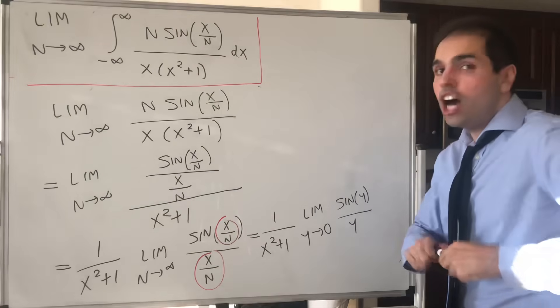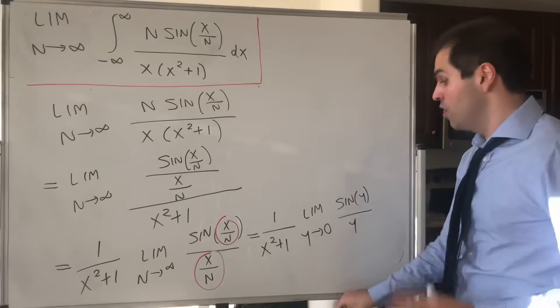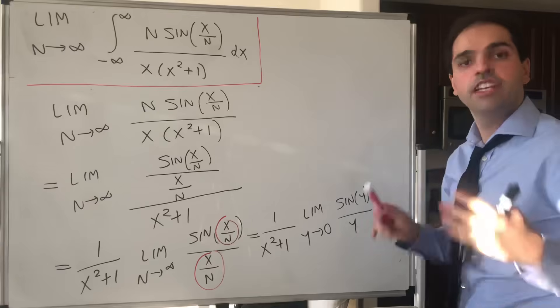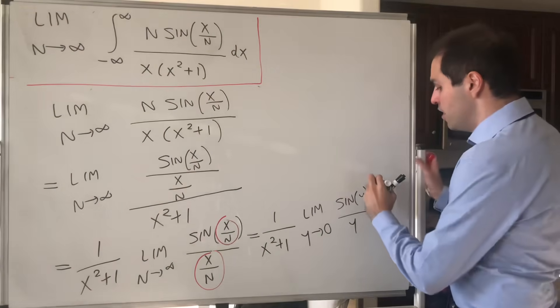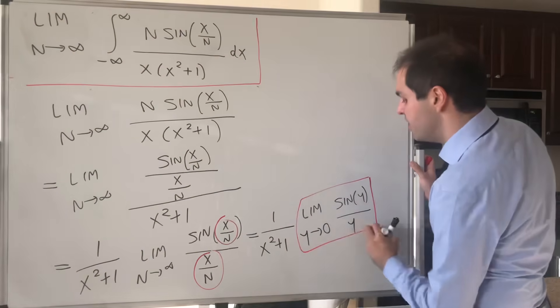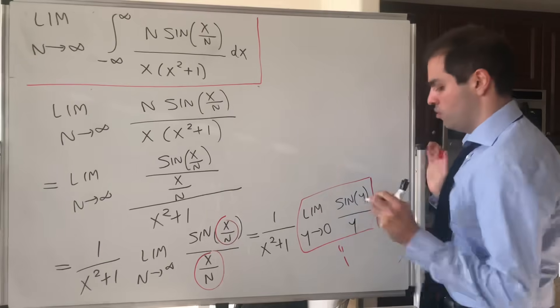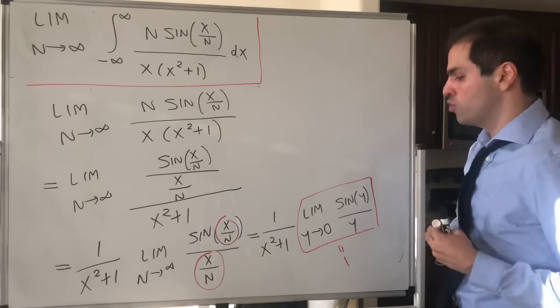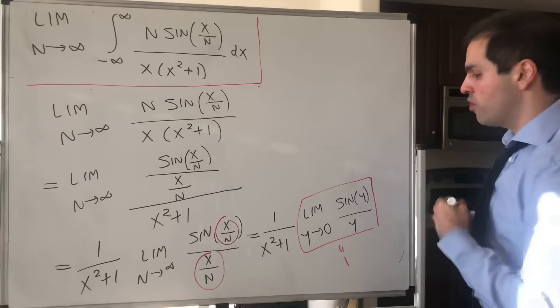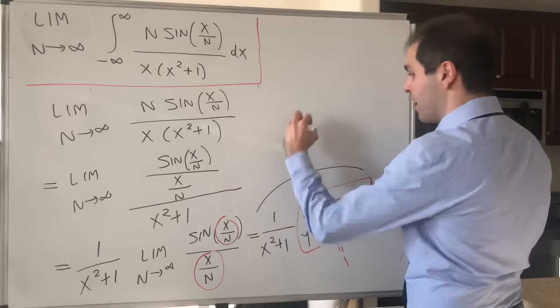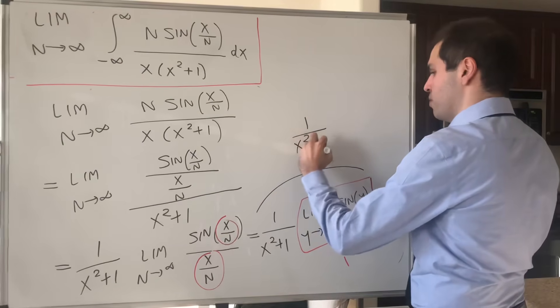And now, not because of L'Hopital's rule, but because of a different technique in one of my videos, you get that this limit is actually 1. So sine of y over y goes to 1 as y goes to 0, so this whole thing is just 1 over x squared plus 1.